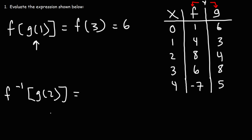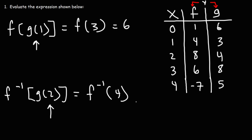Now let's find the inverse of f of g of 2. What is g of 2? g of 2 is 4. So now we have the inverse of f of 4 — we're looking for an x value. Starting with f, the y value is 4, and the corresponding x value is 1. So the inverse of f of 4 is 1.